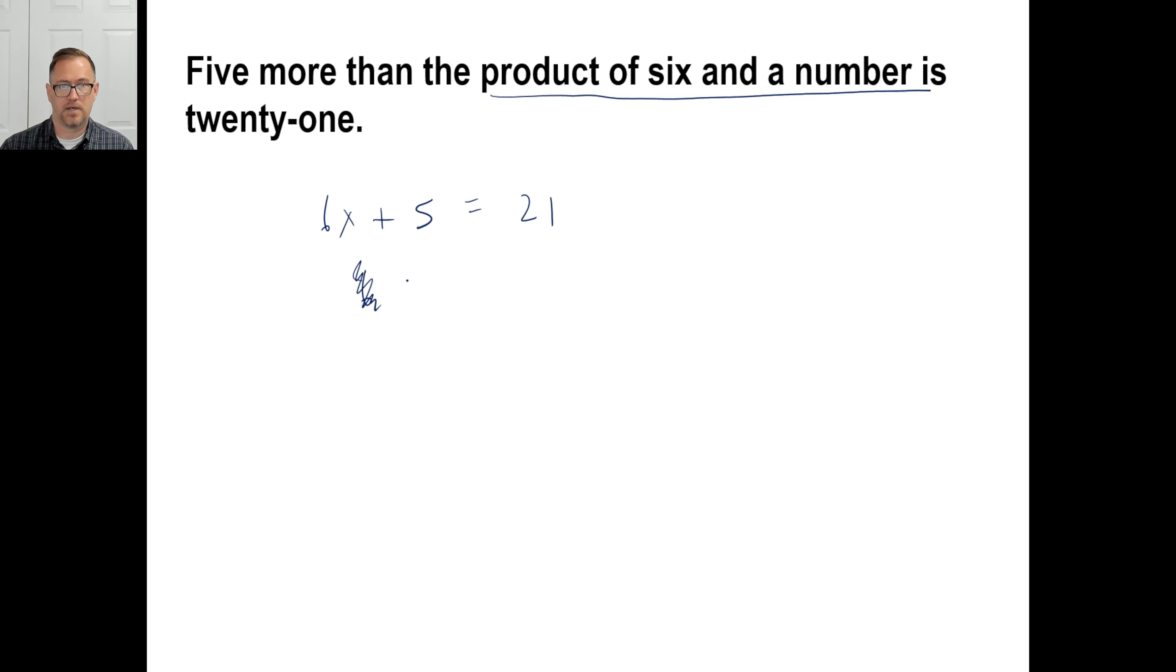So let's go. I'm going to subtract five and that's going to be 6x equals 16 and divide by six. There we go. 16 over six. Reduce that to eight over three or two and two thirds or whatever you want to say.